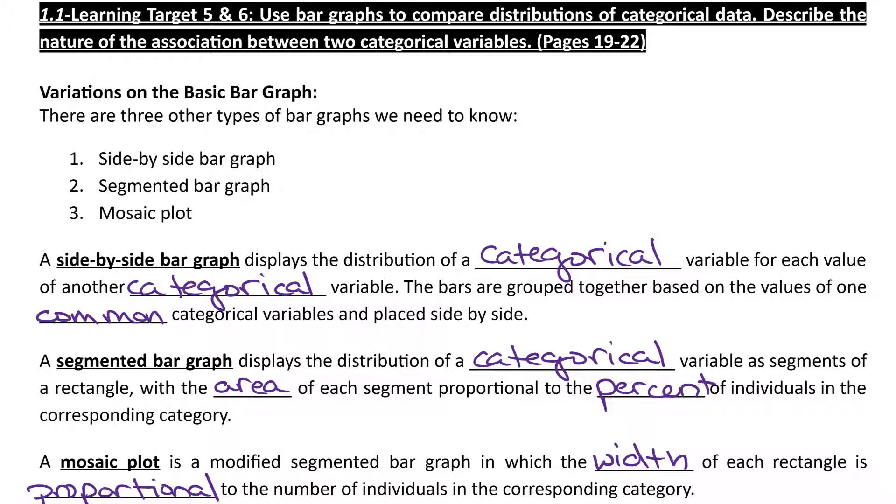In our last lesson, we talked about bar graphs for categorical data. We're continuing in 1.1, focusing on categorical data, but now we're going to look at some variations to the basic bar graph. Today we're going to talk about the side-by-side bar graph, the segmented bar graph, and the mosaic plot.